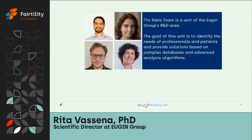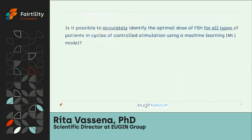In our group at UGEN, we recognized this possibility a few years ago and developed a data team solely responsible for developing solutions based on complex databases and algorithm analysis. Our priorities for clinicians and patients led us to focus on one key question: is it possible to accurately identify the optimal dose of FSH for all patients in a cycle of controlled ovarian stimulation using machine learning models?